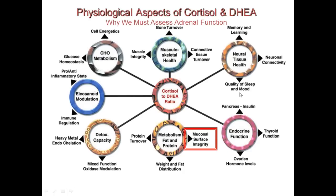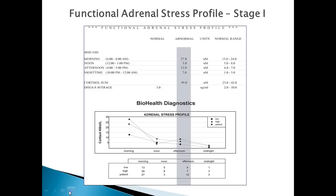This slide shows how important the cortisol system is — it has influence in every single system in our body: sugar metabolism, bone health, our nervous system, inflammation control, how our body detoxes chemicals we're exposed to environmentally or produce on our own, the metabolism of fat and protein, and finally the endocrine system. The balance of adrenal function also directly influences thyroid function.